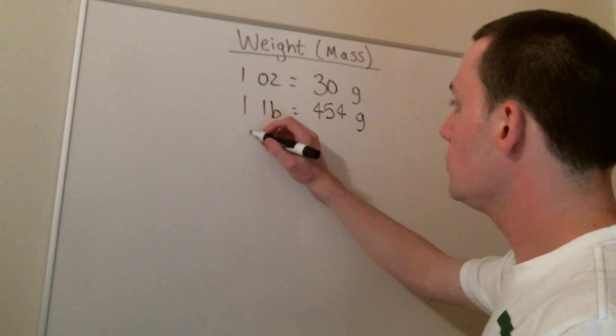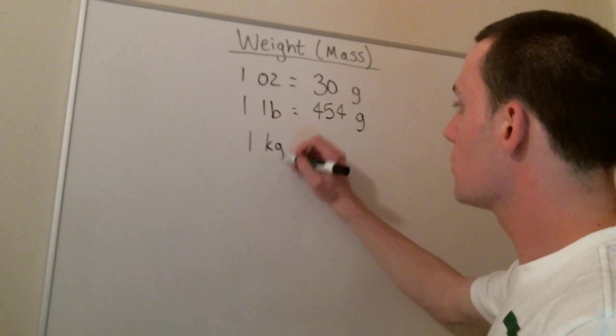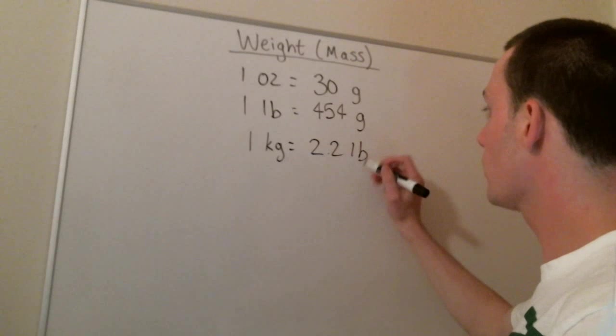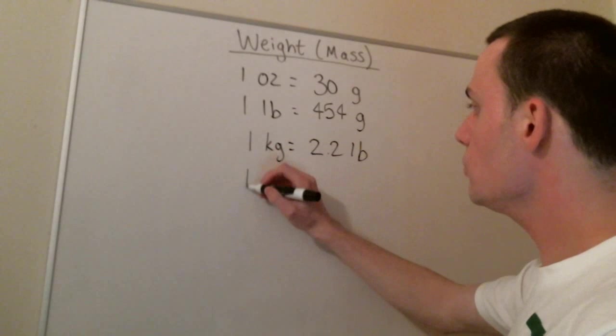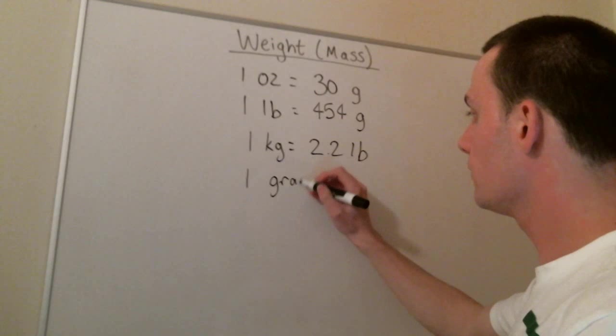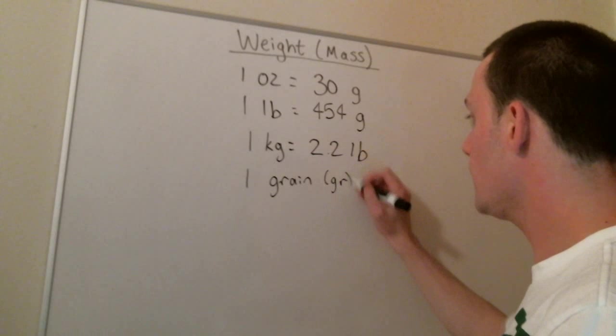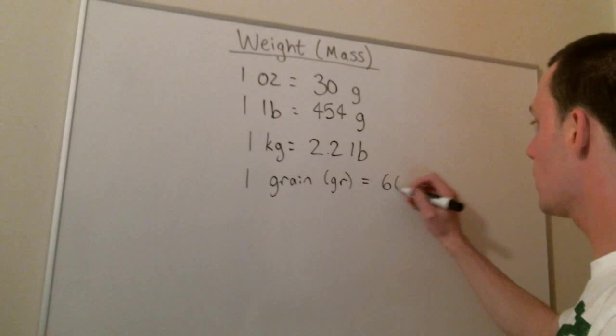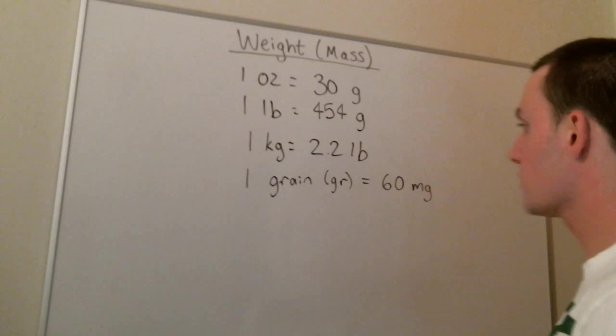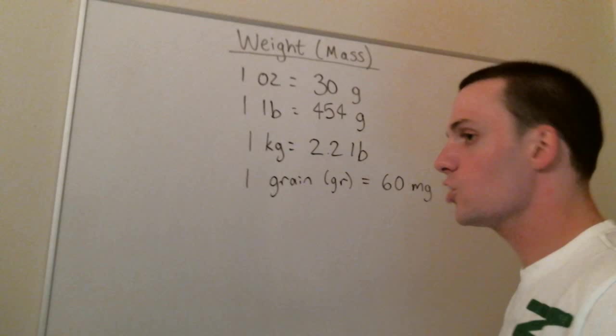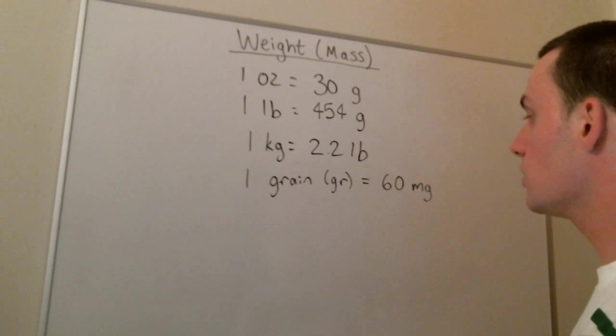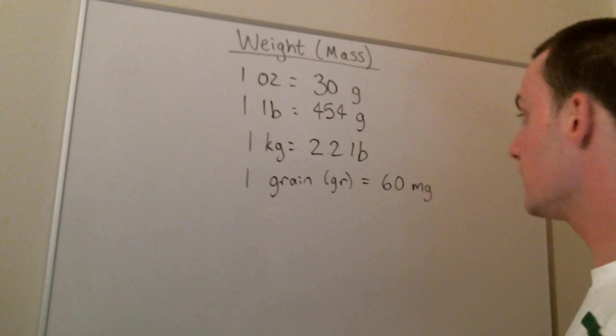We also use kilograms to measure weight, and one kilogram is equal to 2.2 pounds. We also use something called the grain, which we'll abbreviate GR. And one grain is approximately equal to 60 milligrams. The actual conversion is closer to 64 milligrams, but again, it's a good approximation that we can use in the community setting.